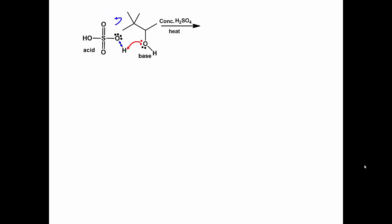In this reaction, an alcohol is added to a strong concentrated acid and is heated. In the first step of the mechanism, the alcohol donates its electrons to an acid in an acid-base reaction, or proton transfer reaction, to form the protonated alcohol or oxonium cation.